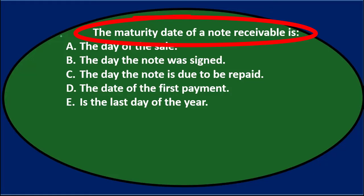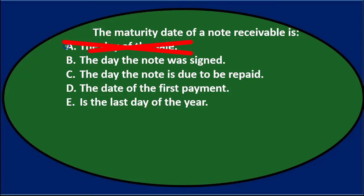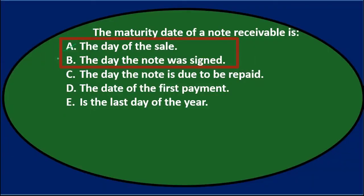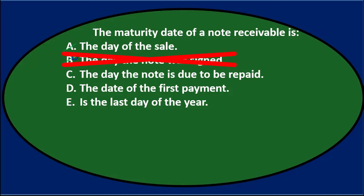The maturity date of a note receivable is A, the day of the sale. The day of the sale is the beginning of the note, and maturity would be the end of it, so it's probably not A. B, the day the note was signed — that also happens at the beginning of the note, and A and B could possibly cancel each other out. So it's probably not B either.